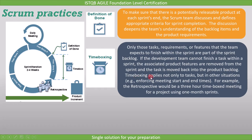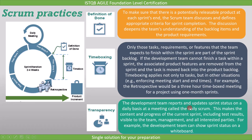Time Boxing applies not only to tasks, but in other situations as well — for example, enforcing meeting start and end times. For example, the retrospective would be a three-hour time boxed meeting for a project using one-month sprints. The last practice is Transparency. The development team reports and updates sprint status on a daily basis at a meeting called the daily scrum. This makes the content and progress of the current sprint, including test results, visible to the team, management, and all interested parties. For example, the development team can show sprint status on a whiteboard.